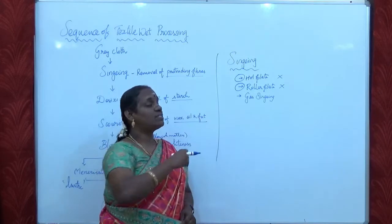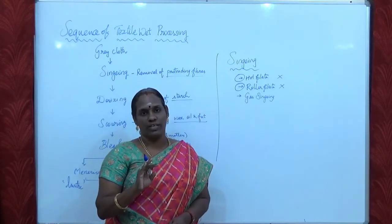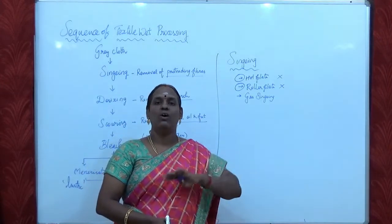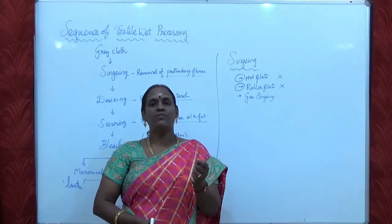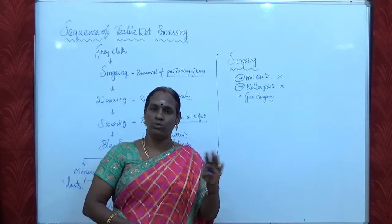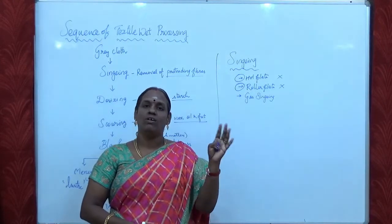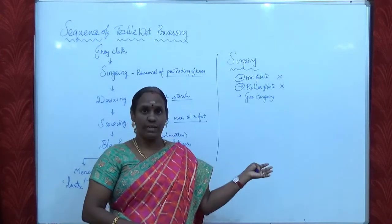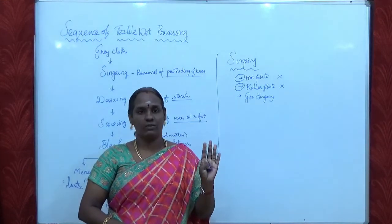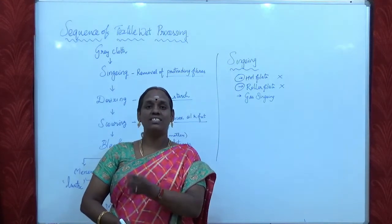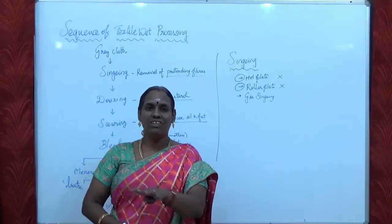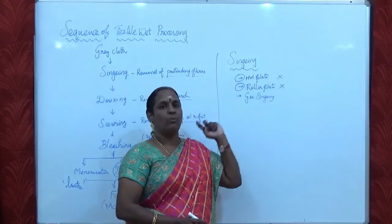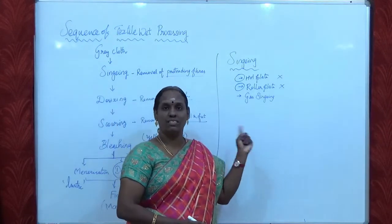Hot plate and roller plate singeing have some disadvantages. In hot plate singeing, the fabric passes over the hot plate but the temperature is not uniform throughout the process — it sometimes reduces or increases. Because of this uneven temperature, uneven singeing is carried out, which causes uneven dyeing and uneven printing. So these two types of singeing are not popularly used.